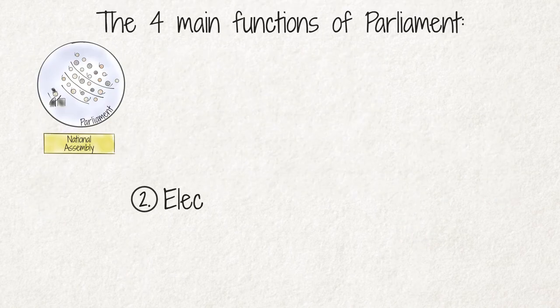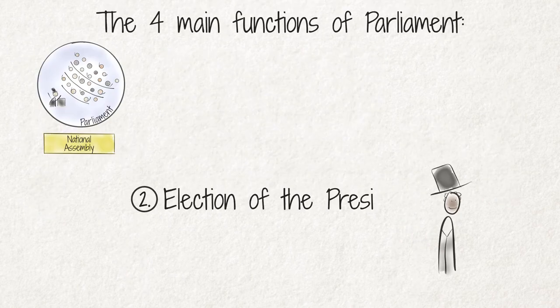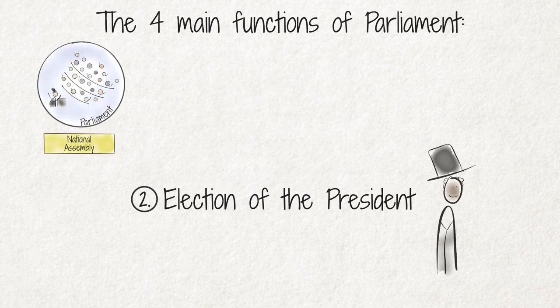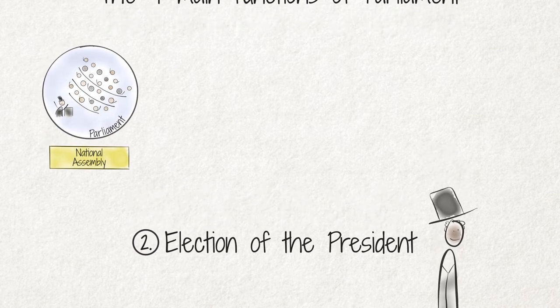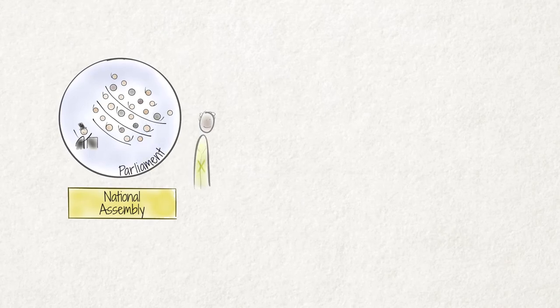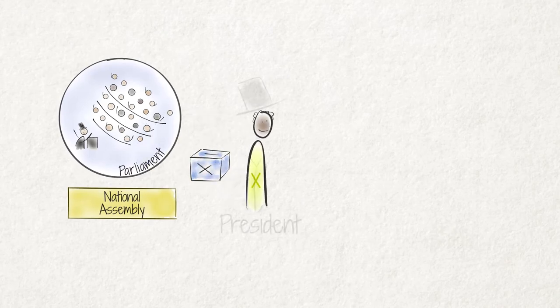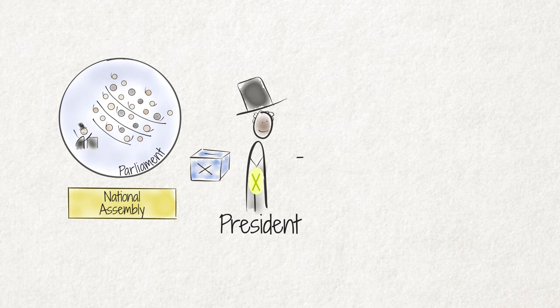The second function is the election of the president. At its first sitting after the election, the National Assembly elects the president from among its members. The leader of the political party that wins the majority of the seats in the National Assembly is nominated and elected as president. Once elected president, he or she becomes the head of the executive and stops being a member of parliament.